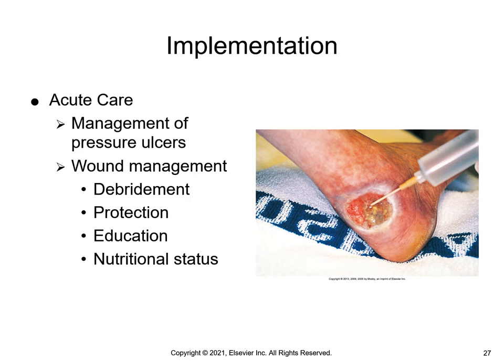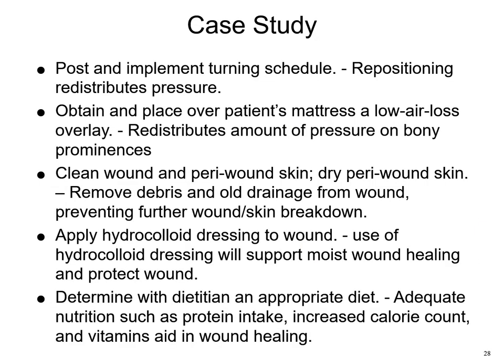Protecting the wound from further injury is a priority. A strategy to prevent surgical wound dehiscence is to place a folded thin blanket or pillow over an abdominal wound so that a patient can splint the area during coughing. Nutritional support is based on the idea that nutrition is fundamental to normal cellular integrity and tissue repair. The first two interventions address pressure management, three and four address wound care, and the last intervention addresses nutritional management.